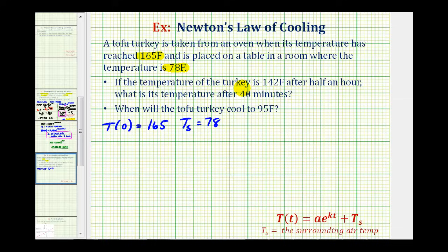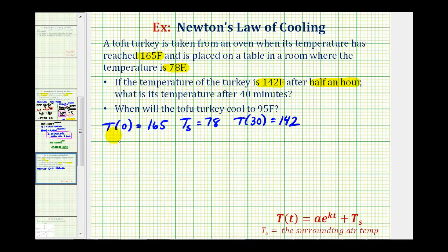Now looking at this first question, we're also told the temperature of the turkey is 142 degrees after half an hour. Because we'll have our function written in terms of minutes, this is telling us that T of 30 must equal 142. After 30 minutes, the temperature of the tofu turkey would be 142. All this information will allow us to find our function T of t.